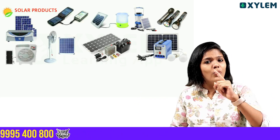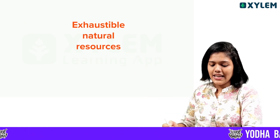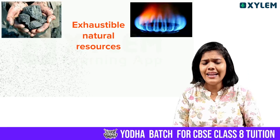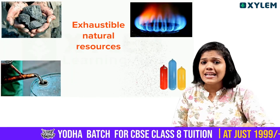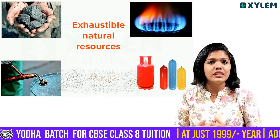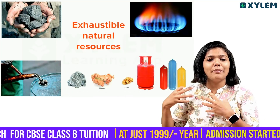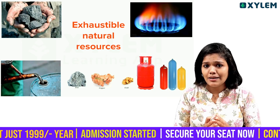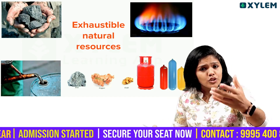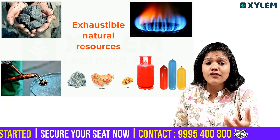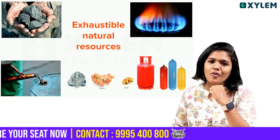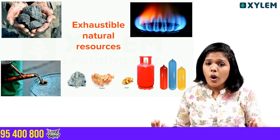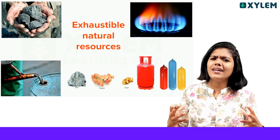Now, exhaustible natural resources — what we have discussed: coal, natural gas, petrol, minerals, metals, and compounds such as copper and gold — these are all examples of exhaustible natural resources.